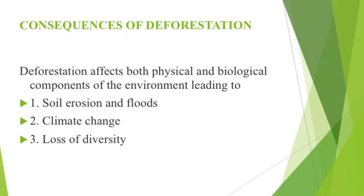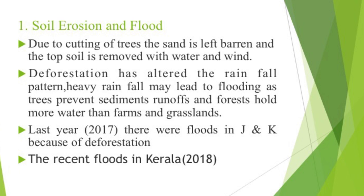Consequences of deforestation affect both physical and biological components of the environment, leading to soil erosion, floods, climate change and loss of diversity. Due to cutting of trees, land is left barren and the topsoil is removed by water and wind. Deforestation has altered rainfall patterns and heavy rainfall may lead to flooding, as trees prevent sediment runoff and forests hold more water than farms and grasslands. There were floods in Jammu and Kashmir in 2017 because of deforestation.